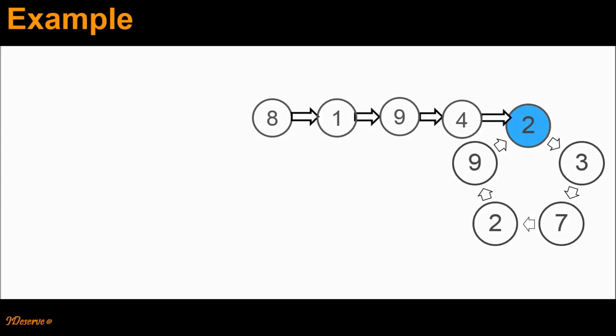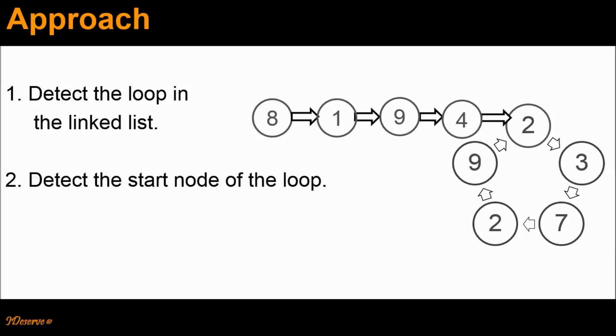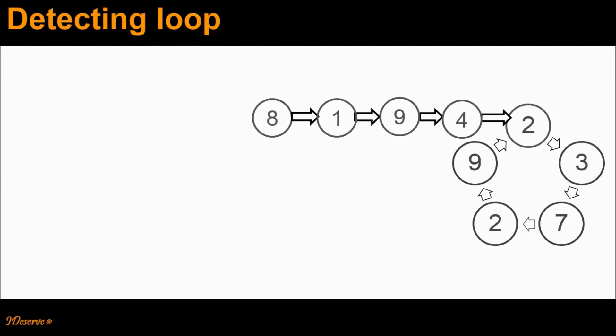The approach to solve this problem is basically a two-step approach. In the first step, we detect the loop in the linked list. Once we detect the presence of a loop in the linked list, in the second step, we detect the start of that loop. Let's now look at the first step of this approach, that is detecting the loop in the linked list.